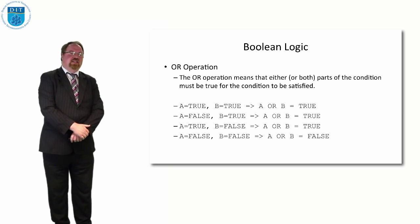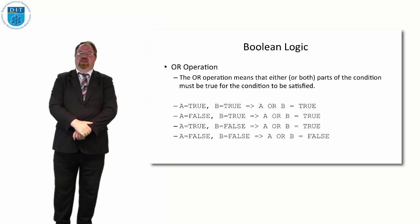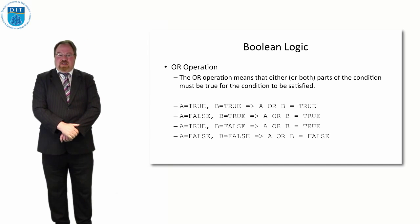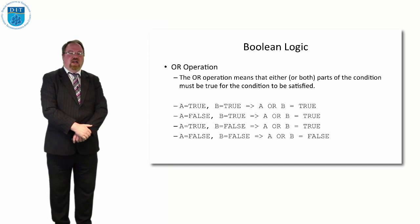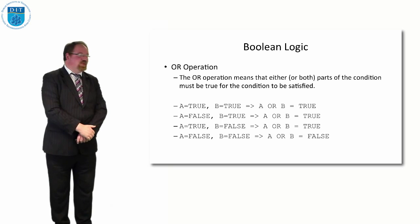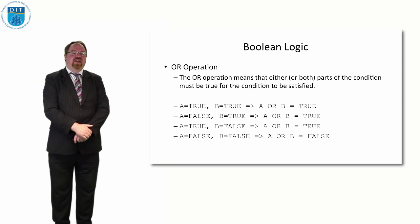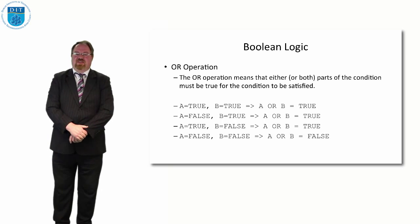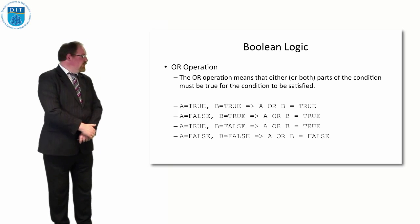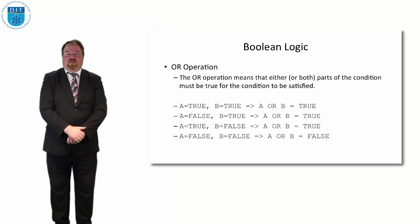The OR operation means if either or both are true, the OR of them is true. So if A is true AND B is true, then A OR B is true. If A is false but B is true, then A OR B is true. If A is true AND B is false, then A OR B is true. And it's only when A is false AND B is false that A OR B is false.